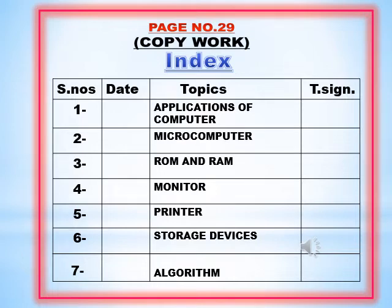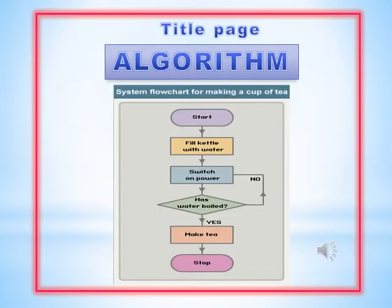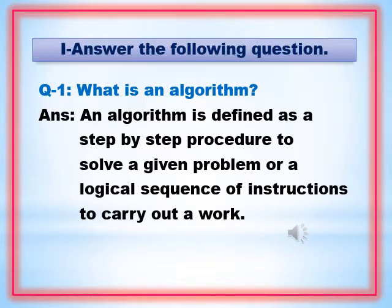Dear students, I hope all of you have done your copy work for the previous chapter. Those who have not done yet, complete it first. Now you will prepare for the written work of chapter number 7. All work has to be done sequentially. First you fill your index. After the index, you will be making the title page of the chapter we are doing. After that, you will do question answers on the very next page.